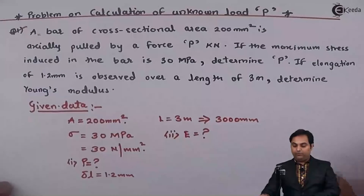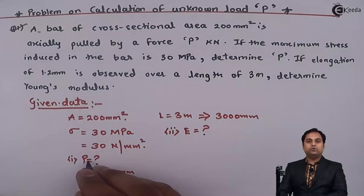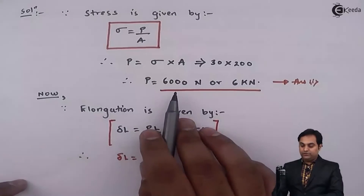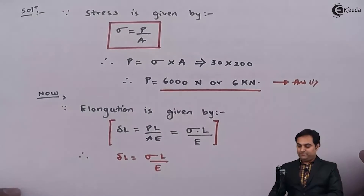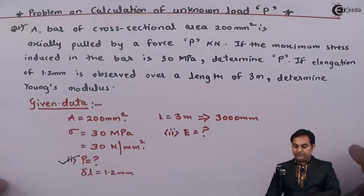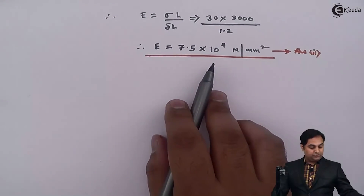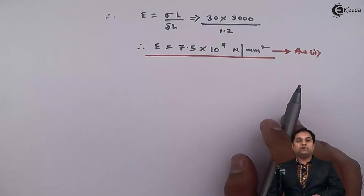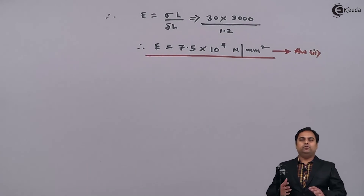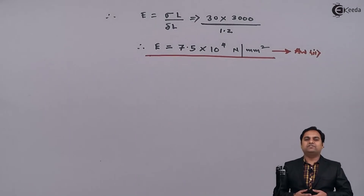So here, looking at the problem, there were two questions. First, to find the unknown load, which we calculated as 6000 Newton or 6 kilonewton. Second, to calculate Young's modulus, which we found to be 7.5 × 10⁴ Newton per mm². In this video we have seen how to calculate the unknown load and Young's modulus when deflection is given.